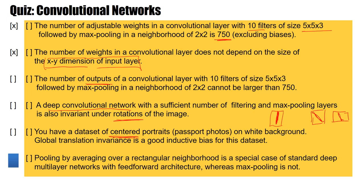Now, locally, some faces — even though centered — might be just a little bit larger than others, or a little bit broader with different broader features. That means locally, edge detectors might be the same, and in fact local features are good features for this. But the aspect of convolutional layers that implies translation invariance over large distances does not apply here.